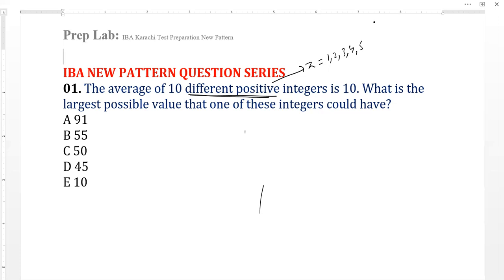And what is the largest possible value that one of these integers could have? So we know that the average formula is equal to the sum of total numbers divided by the total number. So we have average given, which is ten, equals the average of ten different numbers. Total sum not given, ten numbers given. So we would say that 10 times 10 equals sum of n.